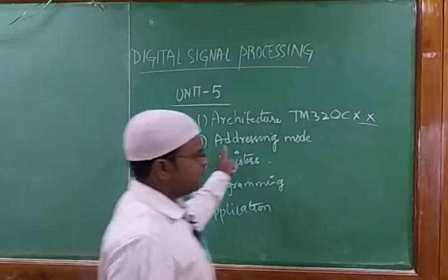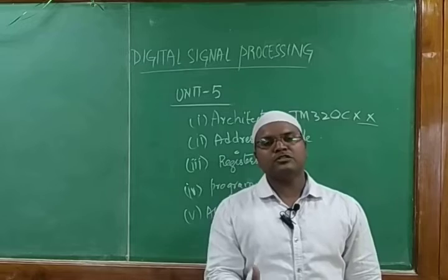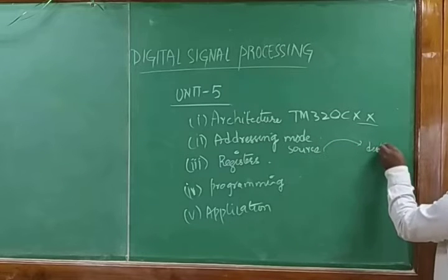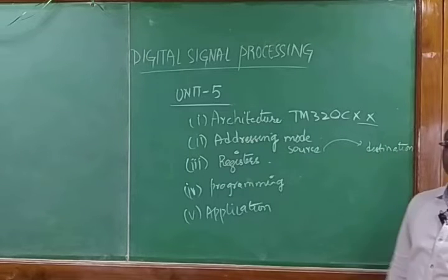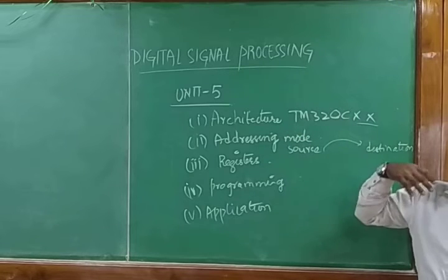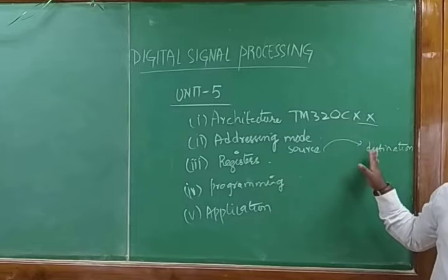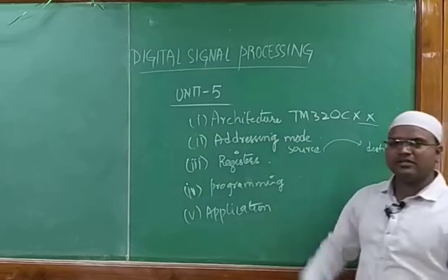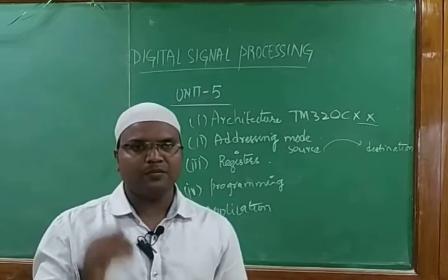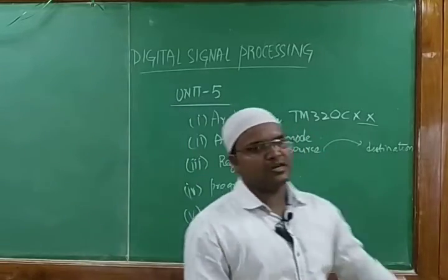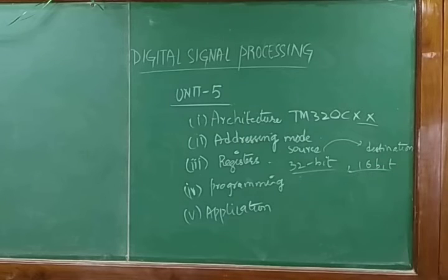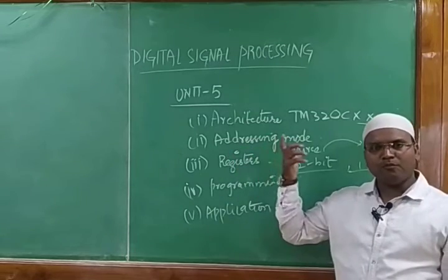The next thing we need to see is addressing mode. Addressing mode means which is your source and which is your destination — how data can be passed from source to destination, from one register to another. Types include immediate addressing mode, direct addressing mode, indirect addressing mode, implicit addressing mode, and explicit addressing mode. We need to understand how data is passed from one source to another destination. Every processor uses registers, and based on those registers data is passed.